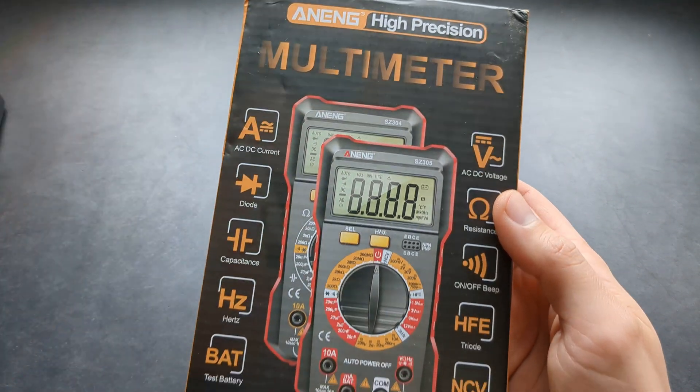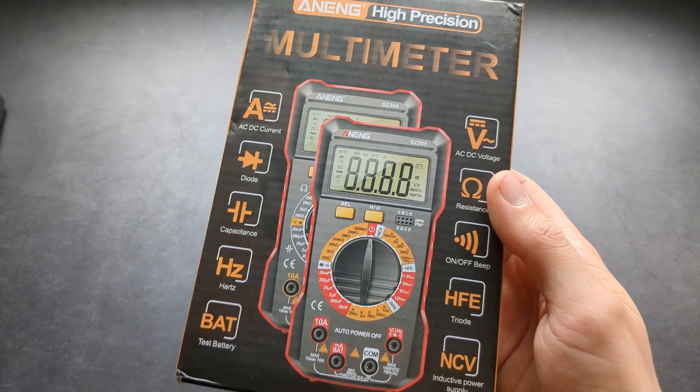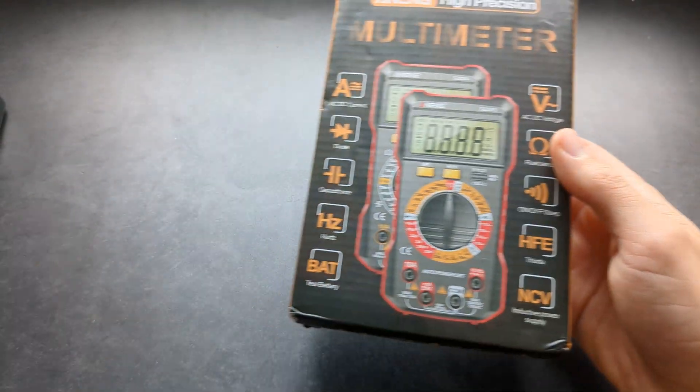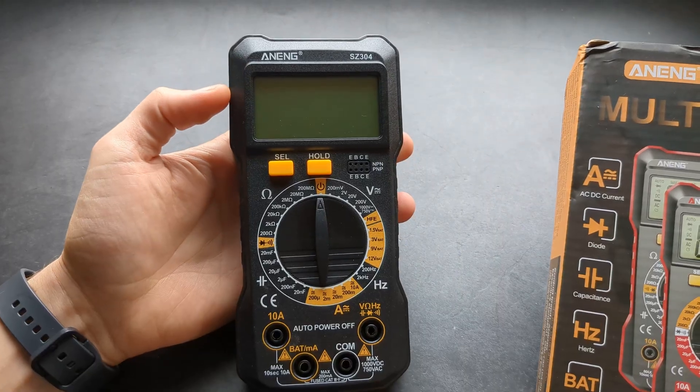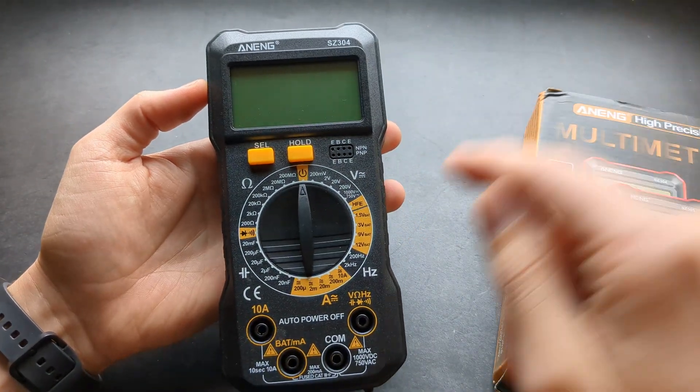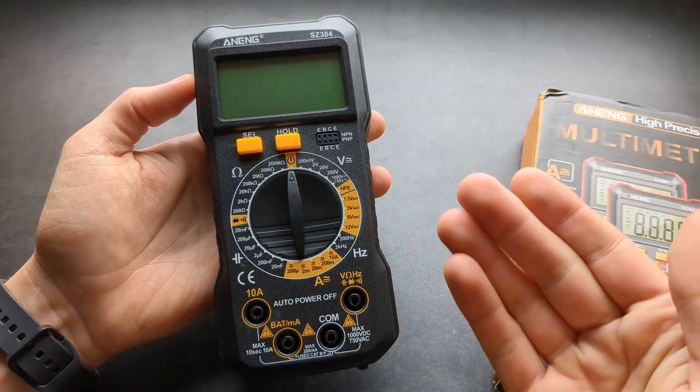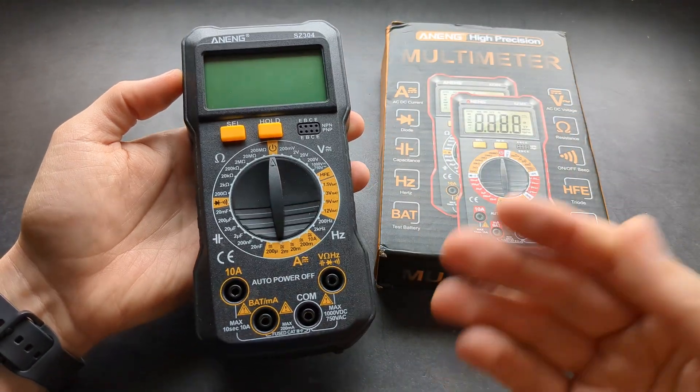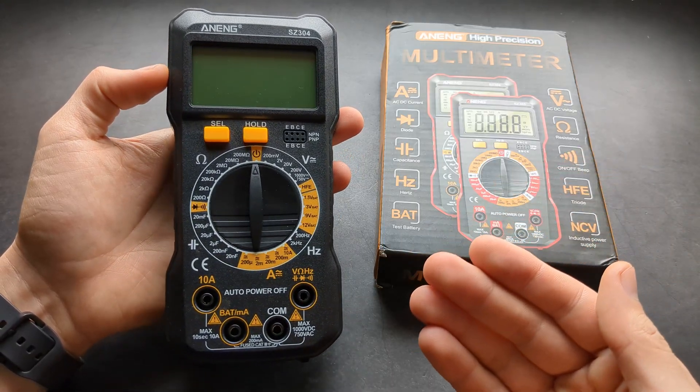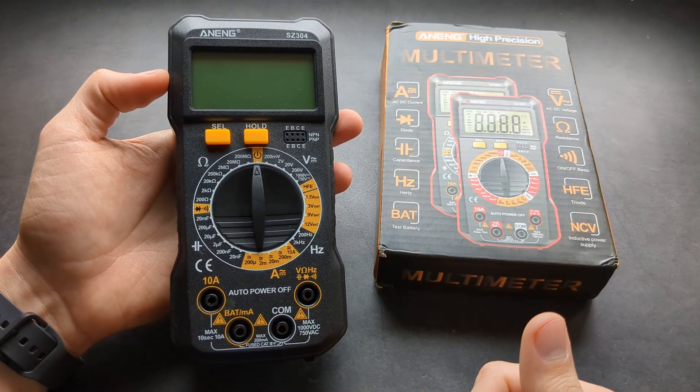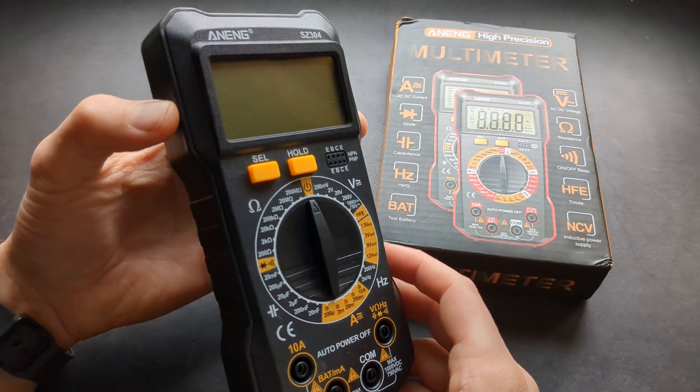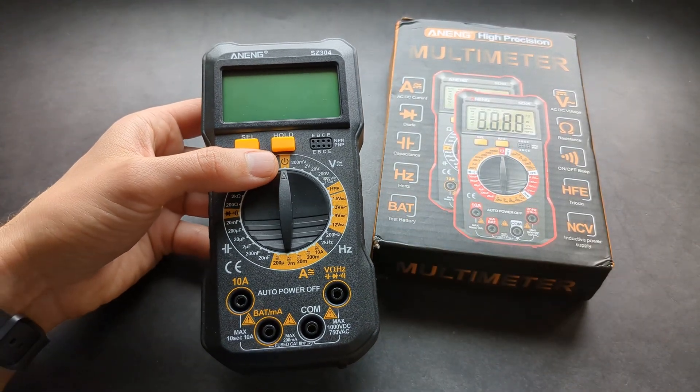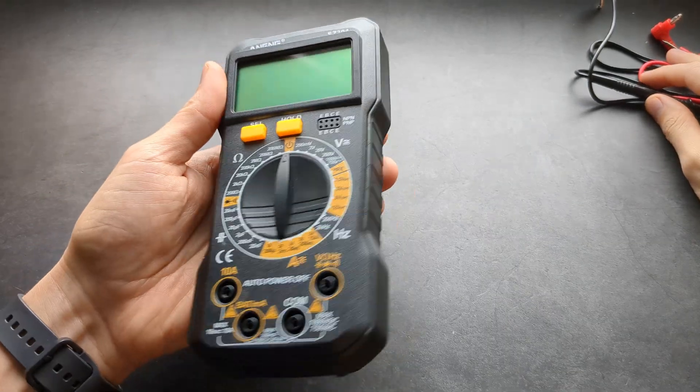The only difference between these two models is that the SZ305 comes with NCV. I have the 304 so it doesn't have NCV, but I wouldn't spend more money for the 305 because the NCV on these units is completely useless. You really need to spend much more money to get decent NCV.